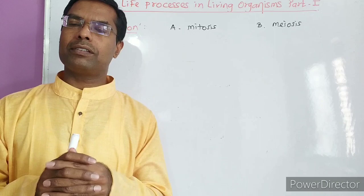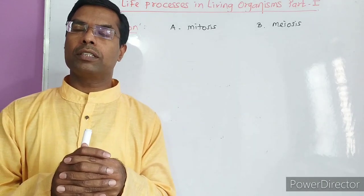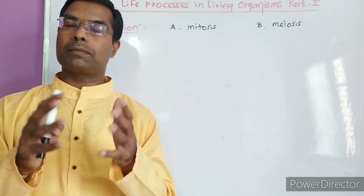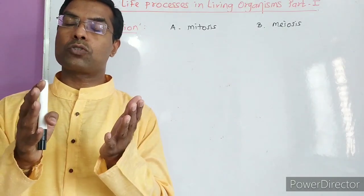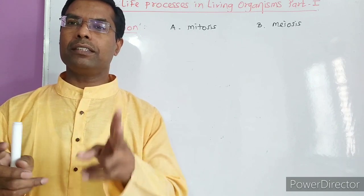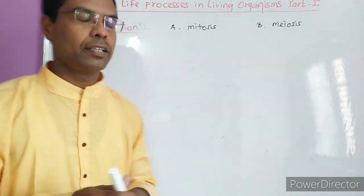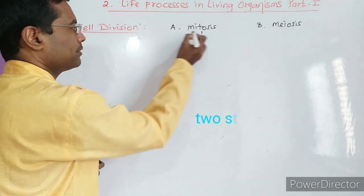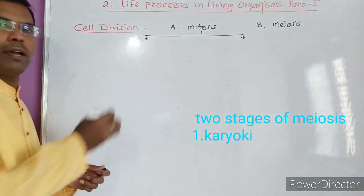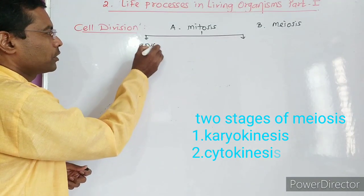What happens in mitosis? Mitosis is a process of cell division that takes place in somatic cells and the chromosomal number is restored. In this type of cell division, two stages are there. One is called karyokinesis. What happens in karyokinesis? Karyo means nucleus.